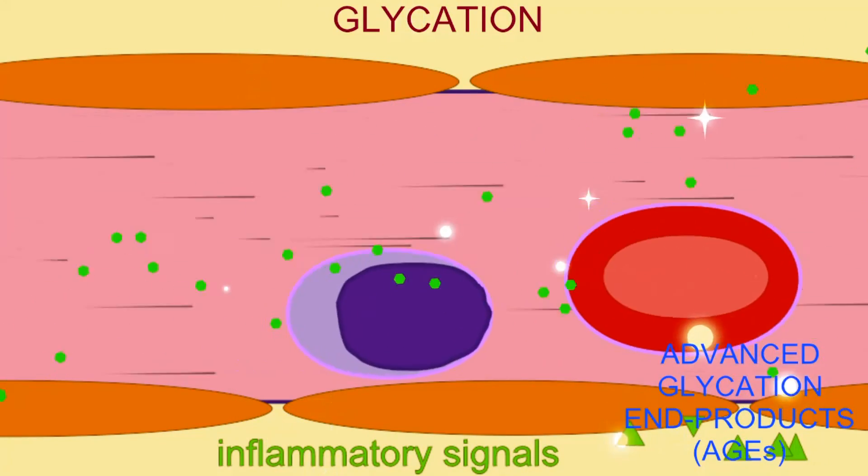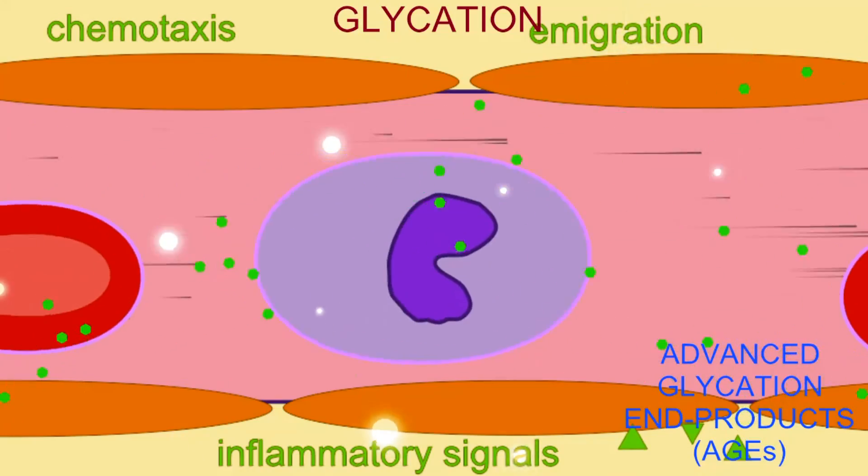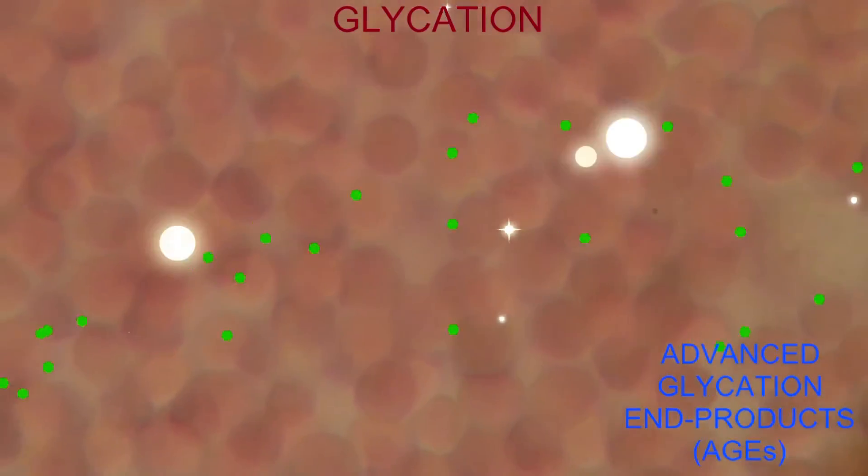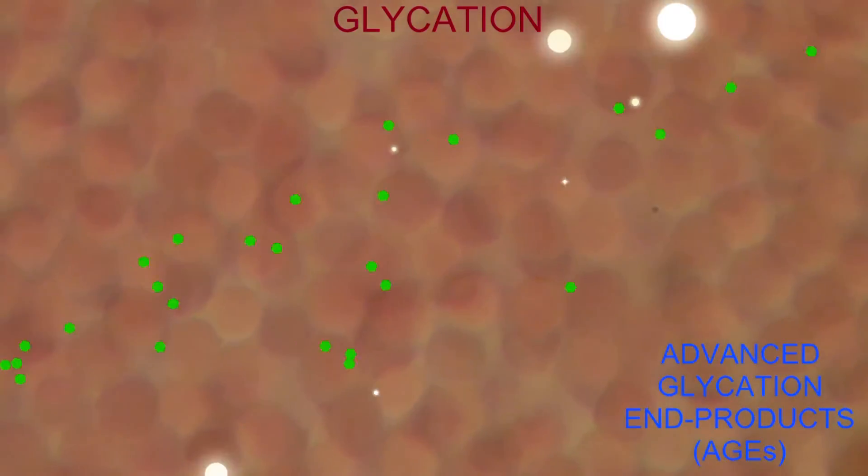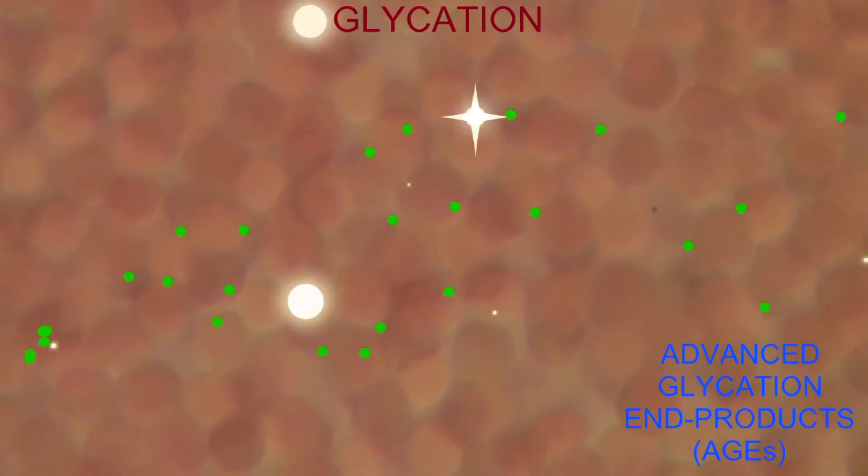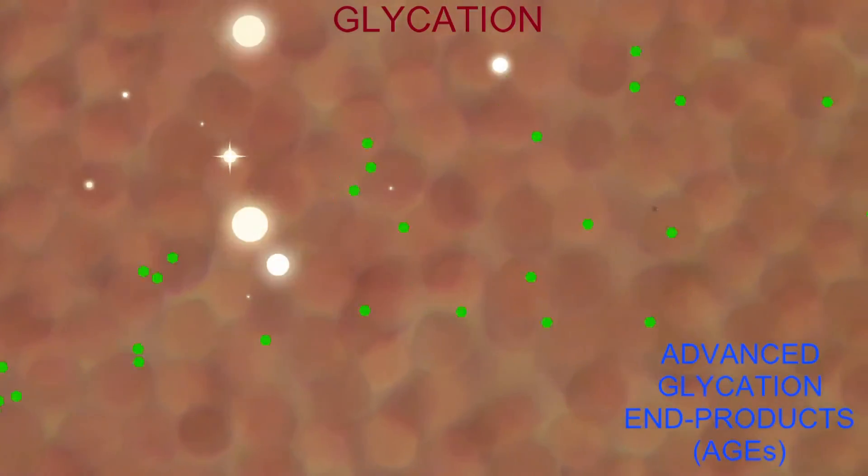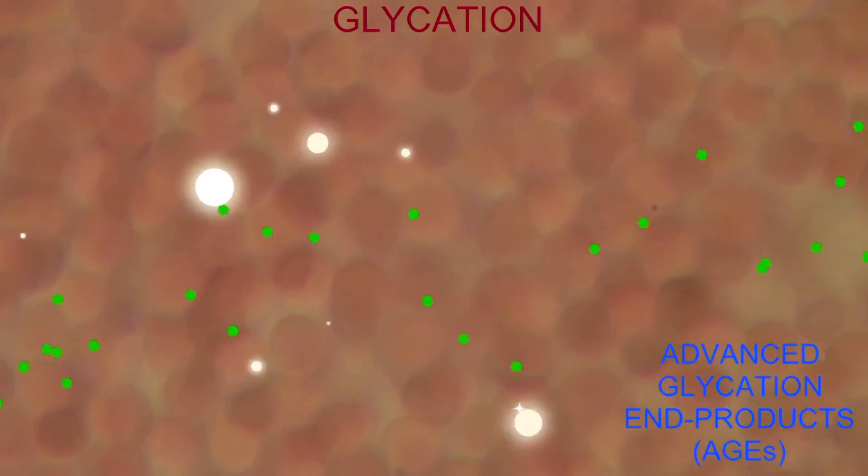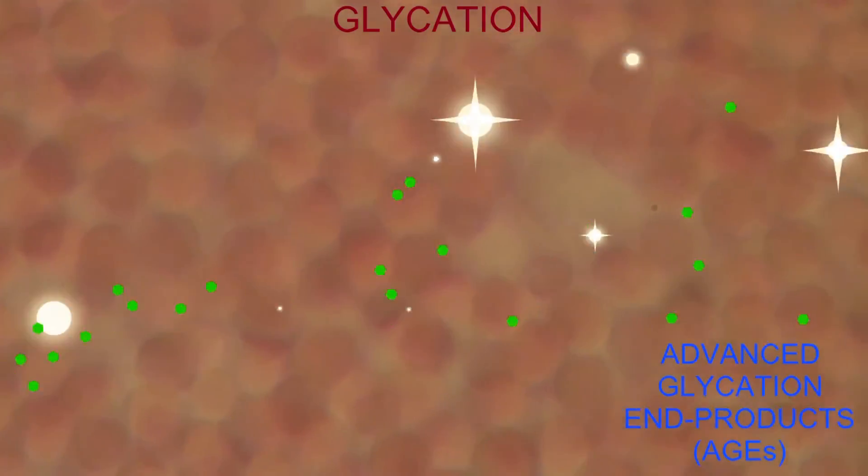The glycation of enzymes decreases enzyme function. For example, red blood cells produce antioxidants using the enzyme glutathione S-transferase, or the GST enzymes. Glycation of these enzymes decreases the production of antioxidants, and this then increases the reactive forms of oxygen and the oxidation of monosaccharides.